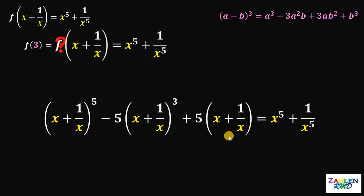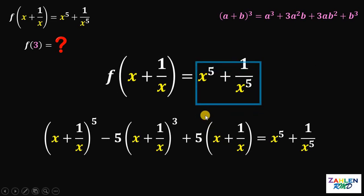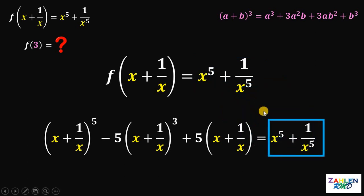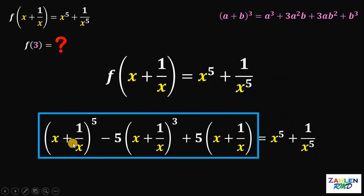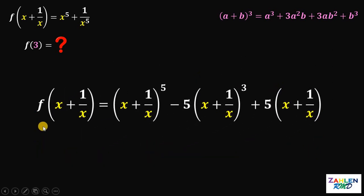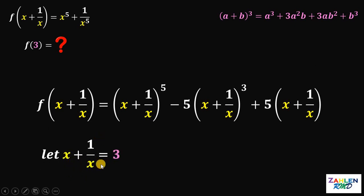We are now ready to answer the question. We have the value of x^5 + 1/x^5 in terms of (x + 1/x). Substituting back, we get f of (x + 1/x) equals (x + 1/x)^5 minus 5(x + 1/x)^3 plus 5(x + 1/x). Our goal is to find f of 3, so we let x + 1/x equal 3.